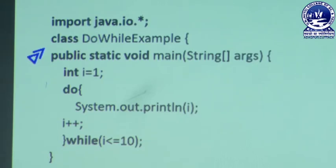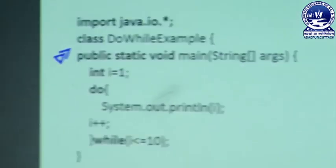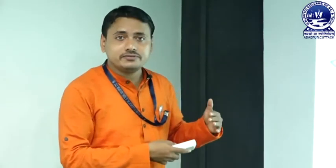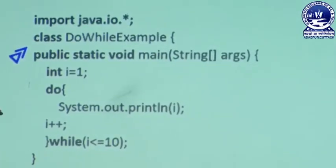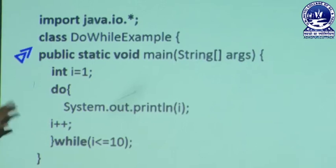Then in the do block, System.out.println i prints 1. Then we increment i++ so i becomes 2. Then we check the condition: while i is less than or equal to 10. If i contains 2, and 2 is less than 10, condition true, then the next iteration is executed. The flow repeats until i equals 11. When i equals 11, condition is false. Then we print the statement 1, 2, 3, up to 10. In do-while, the difference is: first execute the statement, then check the condition.